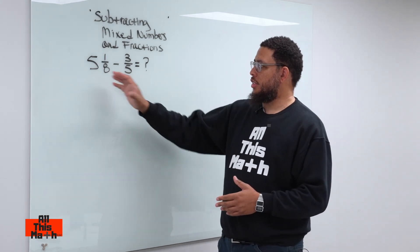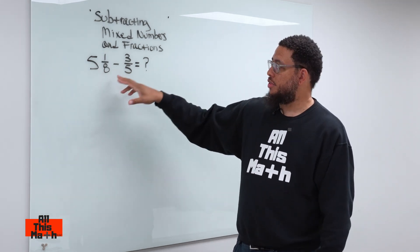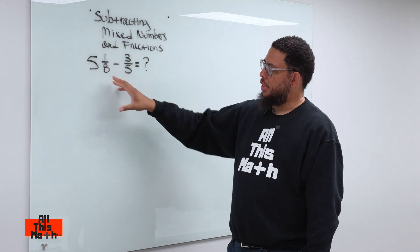Now, first thing, let's look at the problem. We have 5 1/8 minus 3/5. Now, what do these numbers actually mean?